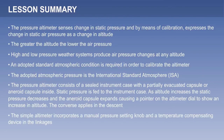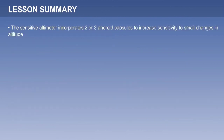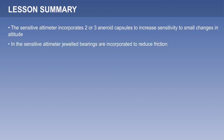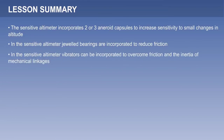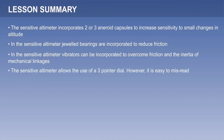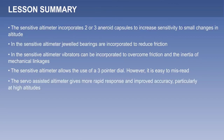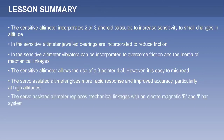The simple altimeter incorporates a manual pressure setting knob and a temperature compensating device in the linkages. The sensitive altimeter incorporates two or three aneroid capsules to increase sensitivity to small changes in altitude, jewelled bearings to reduce friction, and vibrators to overcome friction and the inertia of mechanical linkages. The sensitive altimeter allows the use of a three-pointer dial, however it is easy to misread. The servo-assisted altimeter gives more rapid response and improved accuracy, particularly at high altitudes, and replaces mechanical linkages with an electromagnetic E and I bar system.